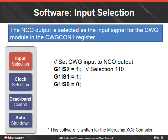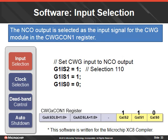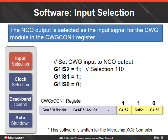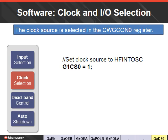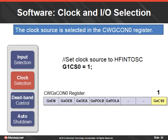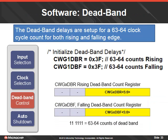First we'll set up the input section. The NCO output is selected as the input signal for the CWG module in the CWG control 1 register. This is done by setting the three G1IS bits to 1, 1, 0. The clock source is selected in the CWG control 0 register. The G1CS0 bit is set to 1 for the high frequency internal oscillator clock. The deadband delays are set up for a 63 to 64 clock cycle count for both rising and falling edge, done by setting each deadband count register to 0x3F, or all six bits set to 1.